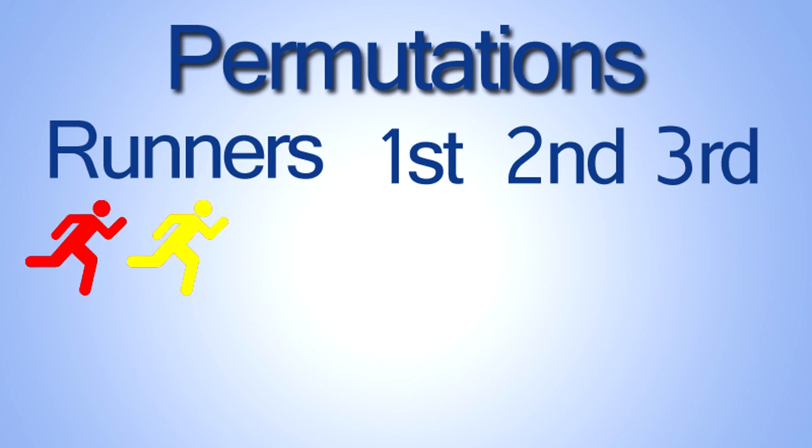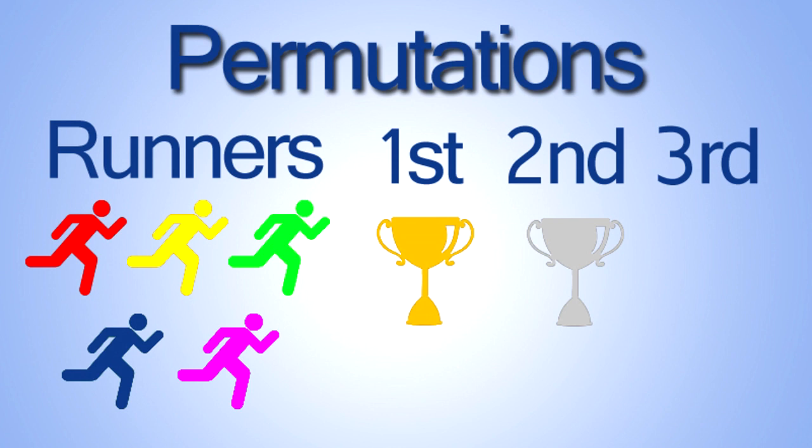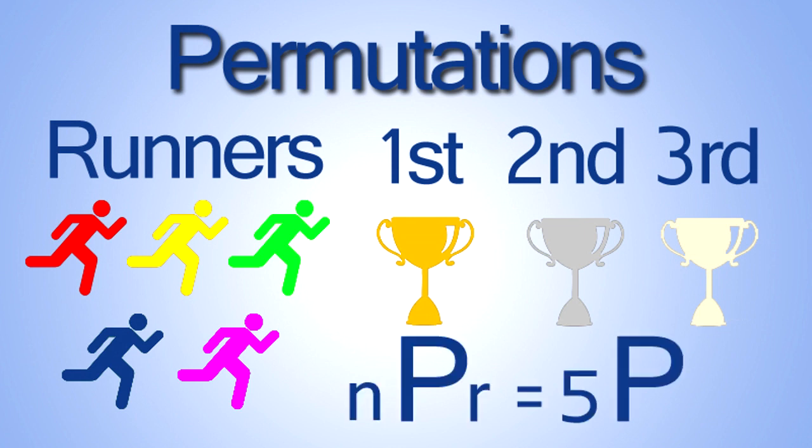Example: there are five runners in a race and there are trophies for first place, second place, and third place. How many different trophy winner orders are there for the race? So the permutation notation is 5P3.